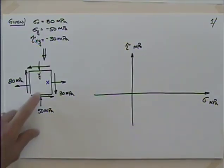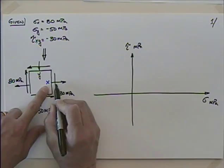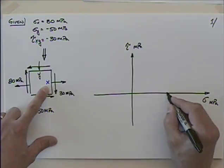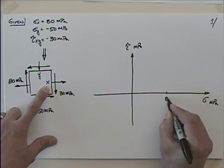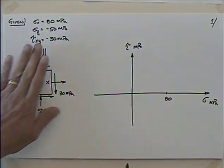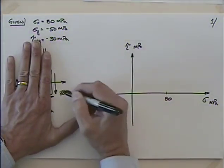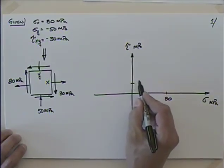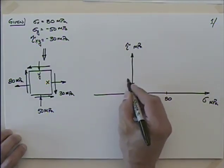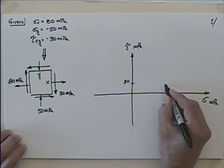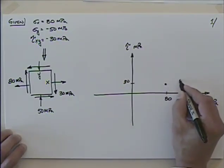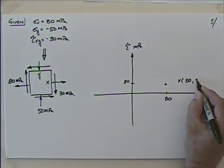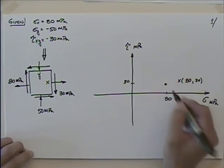On the x-face, we have 80 megapascals in tension, so that's definitely positive — we come out to a value of 80. Looking at the shear on the x-face, it's going to tend to rotate the element clockwise. What do we know about clockwise shear? It's plotted positive. So I'll have 30 here. I have this point on the x-face — 80 and 30 — and that's one end of the diameter.